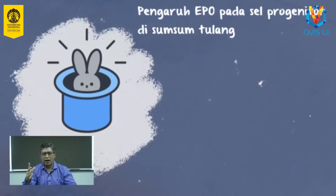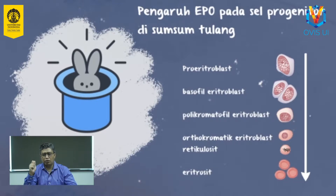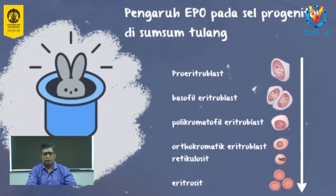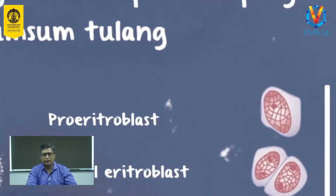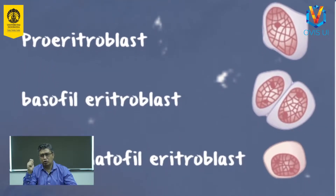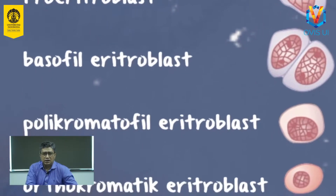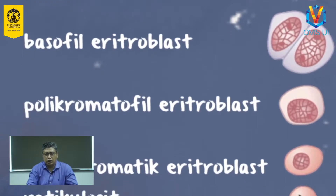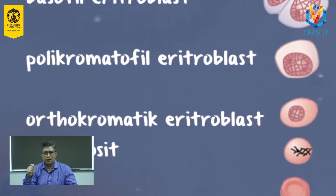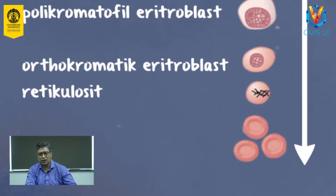CFUE dan BFUE akan berdiferensiasi menjadi prekursor eritroid yang dapat dibedakan secara morfologi pada pemeriksaan sumsum tulang. Prekursor pertama yang dihasilkan adalah pronormoblast atau pro-eritroblast. Pronormoblast akan mengalami diferensiasi berturut-turut menjadi normoblast basofilik, normoblast polikromatofilik, normoblast ortokromatik, dan retikulosit. Seiring dengan meningkatnya maturasi, ukuran sel progenitor eritroid akan mengecil disertai penurunan rasio nukleus terhadap sitoplasma, sehingga dihasilkan sel darah merah matur yang tidak berinti.